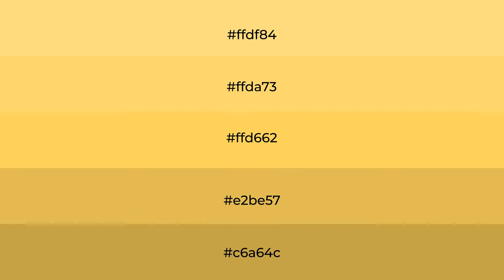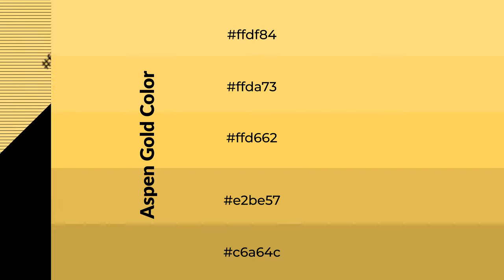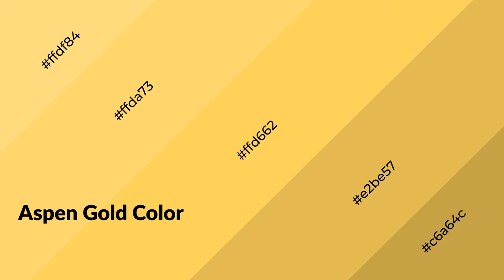To generate shades of a color, we add black to the color, and it is used in patterns and 3D effects. Layers and shades create depth and drama. Aspen gold is a warm color and it emits cozier and active emotions.